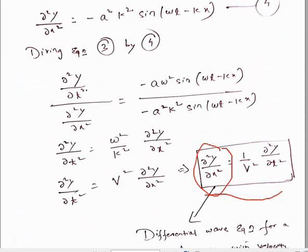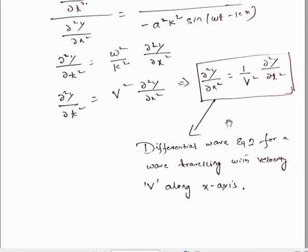This equation is called the differential equation of wave motion. For an electromagnetic wave, it takes the form ∂²y/∂x² = (1/c²)·(∂²y/∂t²), where c is the speed of light. So this is all about the differential equation of wave motion.